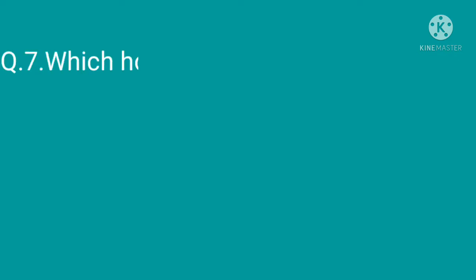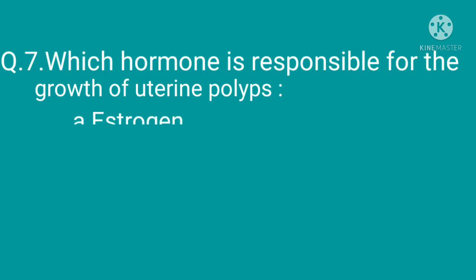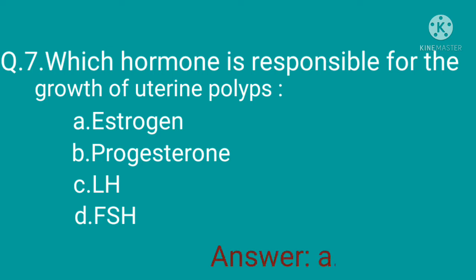Question 7: Which hormone is responsible for the growth of uterine polyps? Option A: estrogen, option B: progesterone, option C: LH, option D: FSH. The correct option is option A, estrogen.